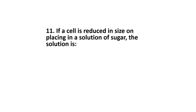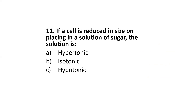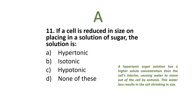Next: if a cell is reduced in size on placing in a solution of sugar, the solution is — hypotonic, isotonic, hypertonic, or none of these? The correct option is hypertonic. A hypertonic sugar solution has a higher solute concentration than the cell's interior, which causes water to move out of the cell by osmosis, resulting in cell shrinkage.